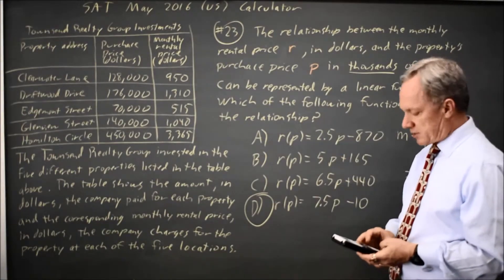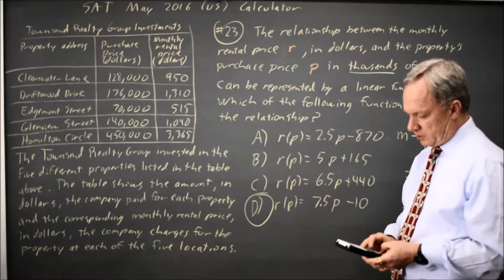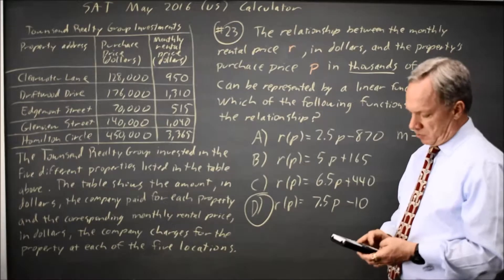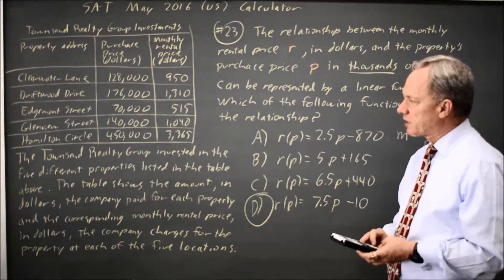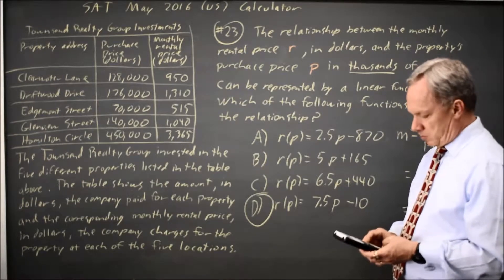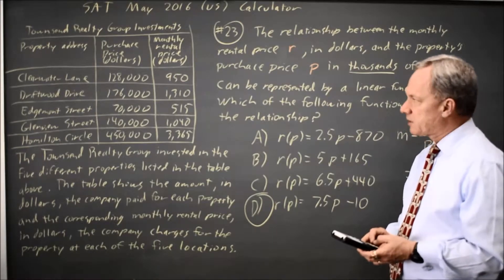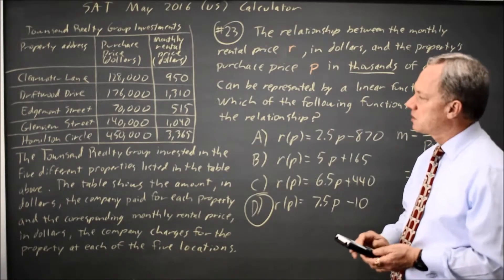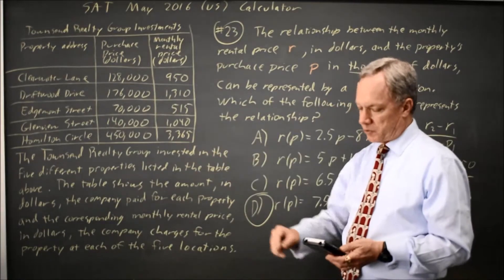So let's try choice A with the last one. That would be 2.5 times purchase price of 415,000 minus 870, and that's 255 which is not the actual rental price.